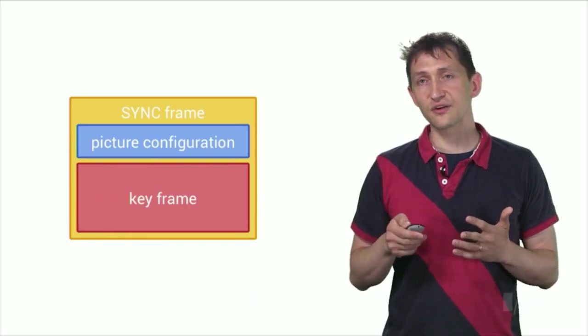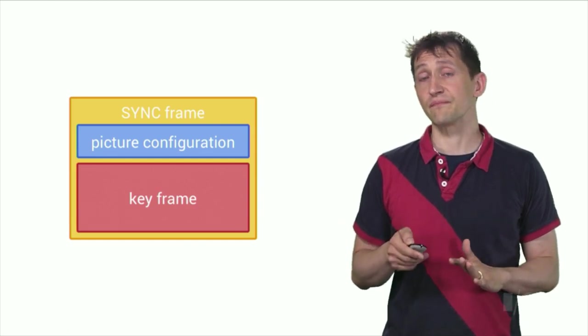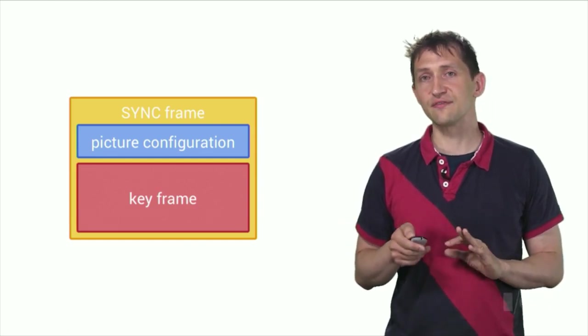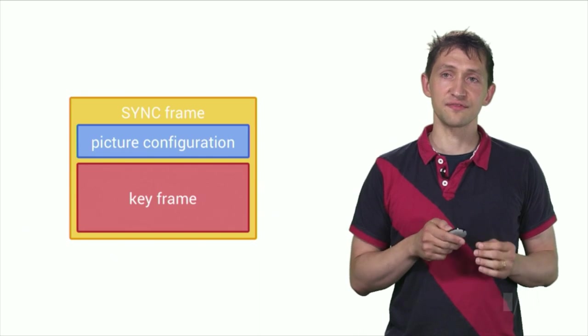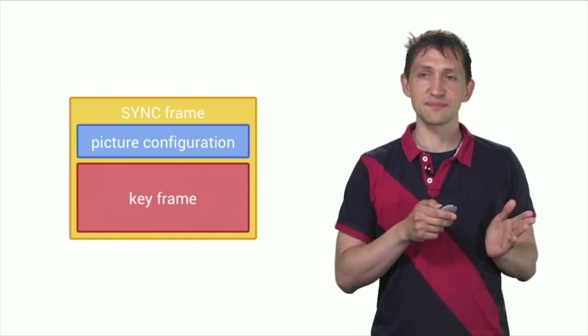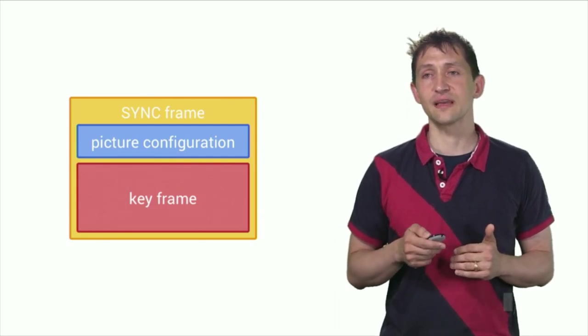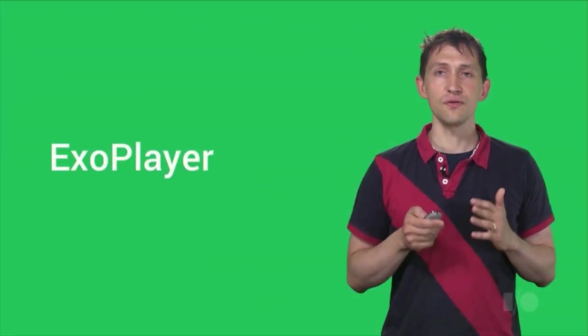To change the video resolution while the codec is running, simply queue a sync frame using queue input buffer. A sync frame is a special key frame that also contains the configuration change parameters. For H.264, this means that the SPS and PPS are supplied together with the IDR frame in a single buffer.